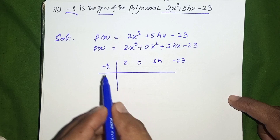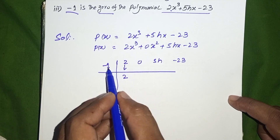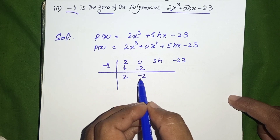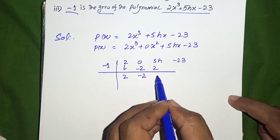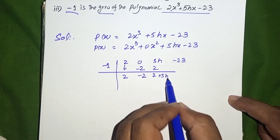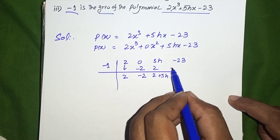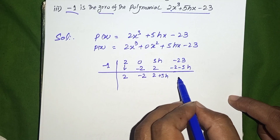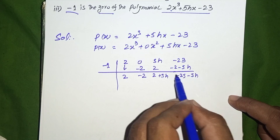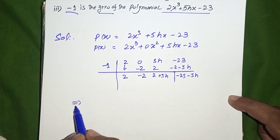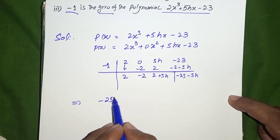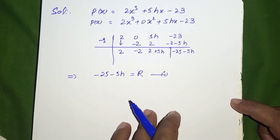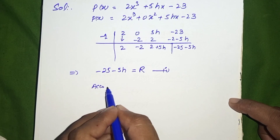Bring down 2. Multiply 2 by -1: -2. Add to 0: -2. Multiply -2 by -1: +2. Add to 5H: 2 + 5H. Multiply (2 + 5H) by -1: -(2 + 5H) = -2 - 5H. Add to -23: the remainder is -25 - 5H.